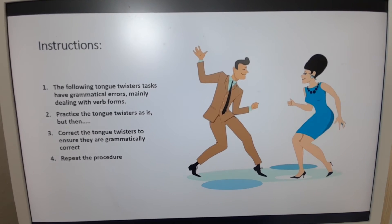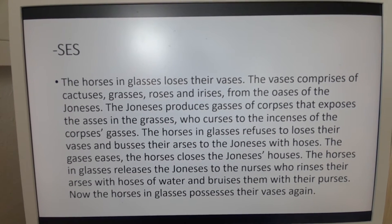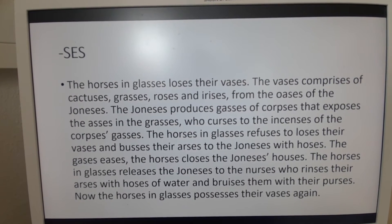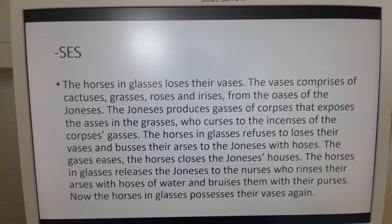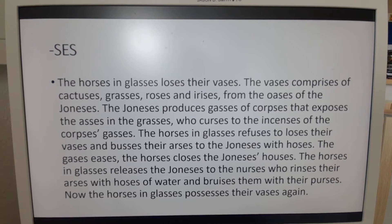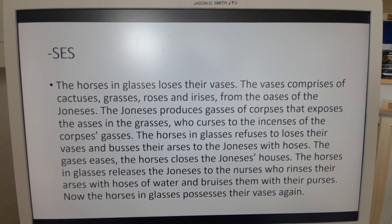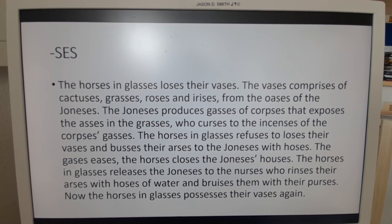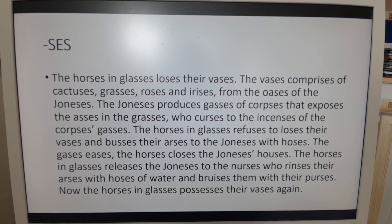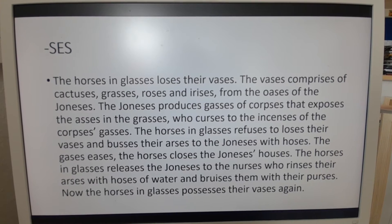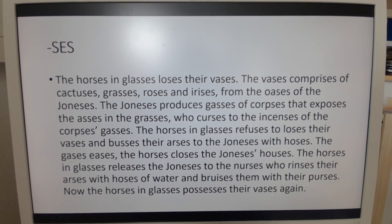With that in mind, we're going to move on to our first set — with S-E-S. The horses in glasses loses their vases. The vases comprises of cactuses, grasses, roses, and irises from the oasis of the Joneses. The Joneses produces gases of corpses that exposes the asses in the grasses, who curses to the incenses of the corpses' gases. The horses in glasses refuses to lose their vases and busts their arses to the Joneses with hoses. Keep in mind, the Joneses is a family name, and ass is another name for a donkey or mule. Arse is British English for buttocks.